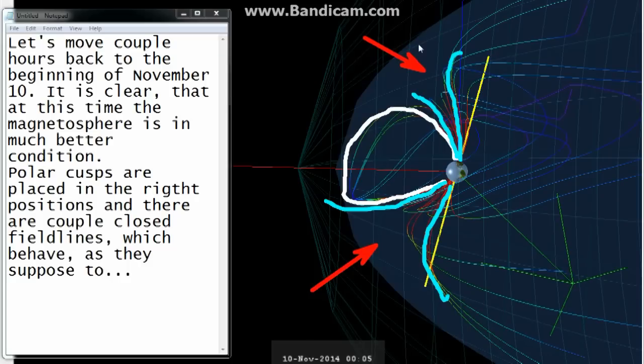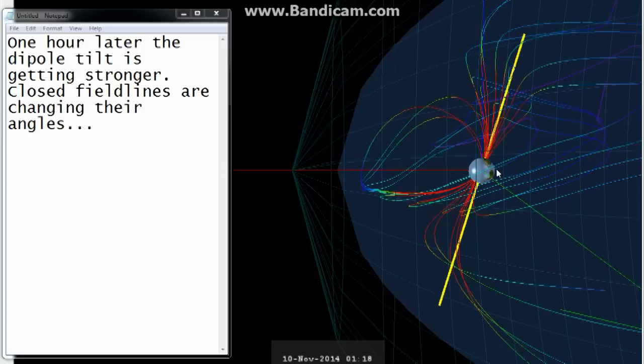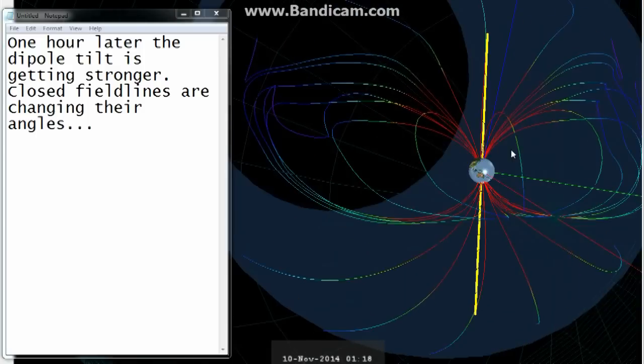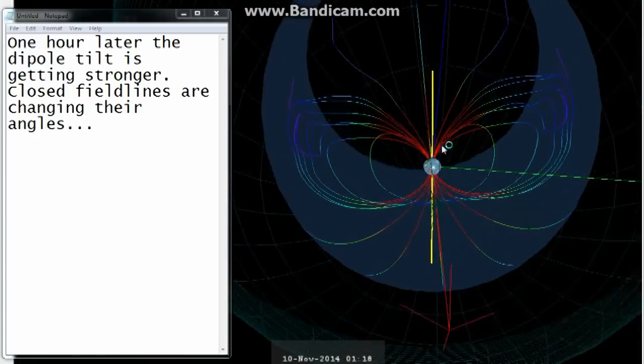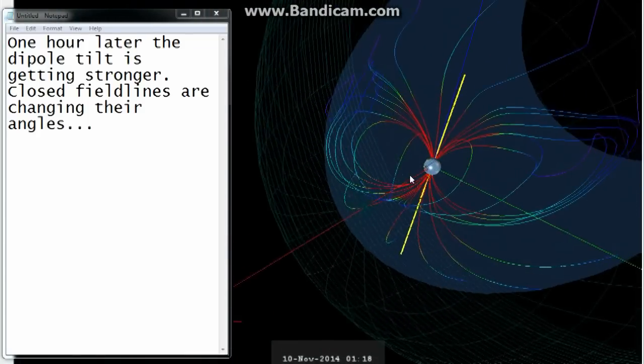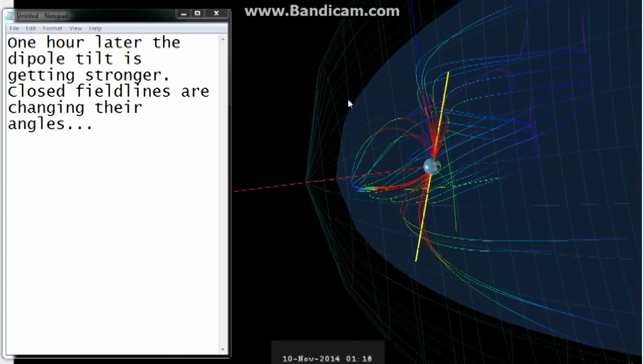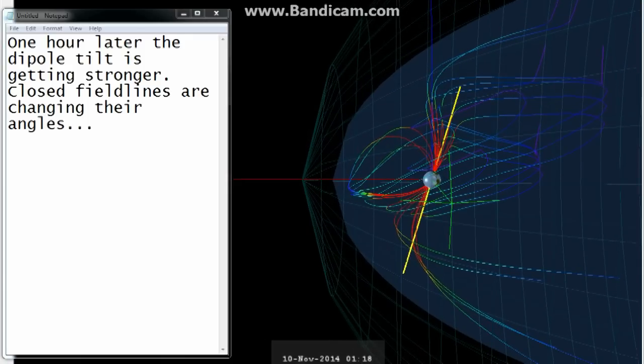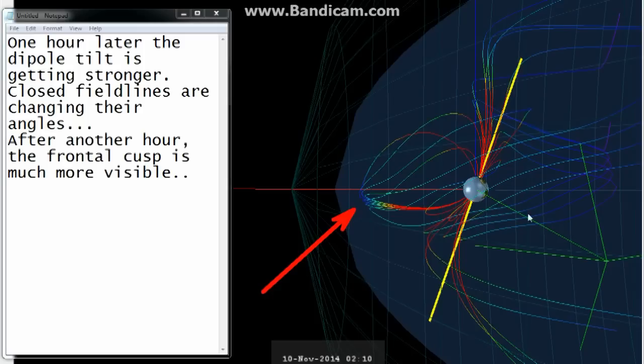Let's move back a couple hours to the beginning of November 10. It is clear that at this time the magnetosphere is in much better condition. Polar cusps are placed in the right positions and there are a couple closed field lines which behave as they're supposed to. One hour later the dipole tilt is getting stronger. Closed field lines are changing their angles. After another hour the frontal cusp is much more visible.